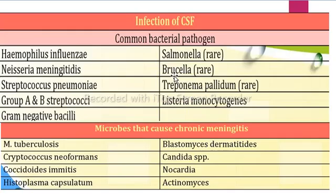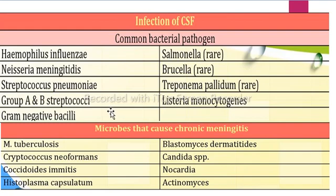Here is a list of common pathogens involved in CSF infections: Haemophilus influenzae, Neisseria meningitidis, Streptococcus pneumoniae, Group A and B Streptococci, gram-negative bacilli, Salmonella, Brucella, Treponema pallidum — these are rare.